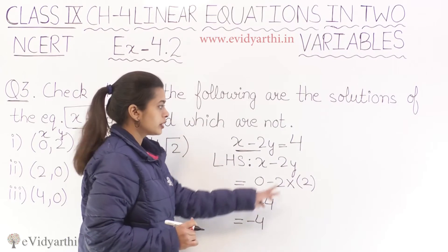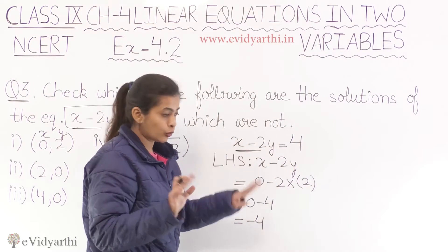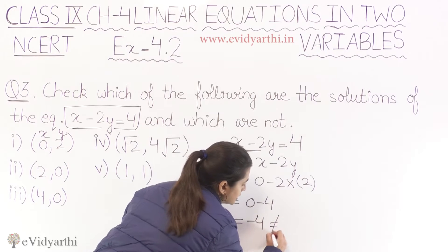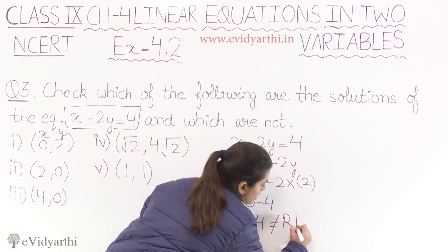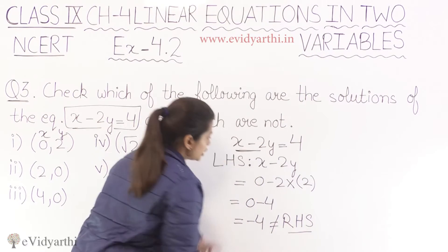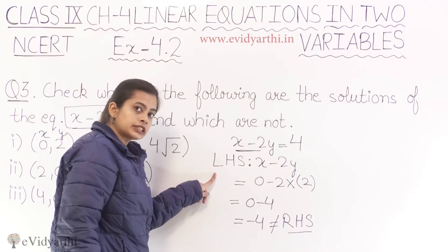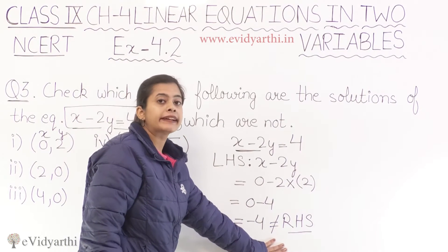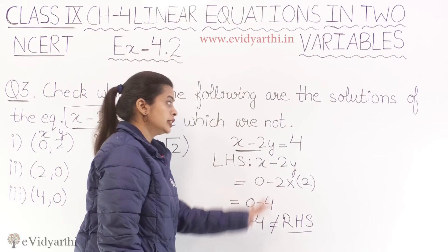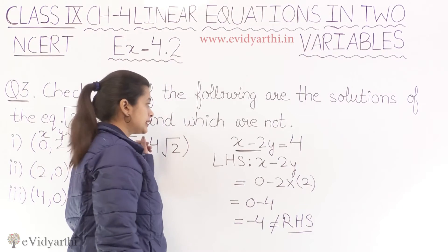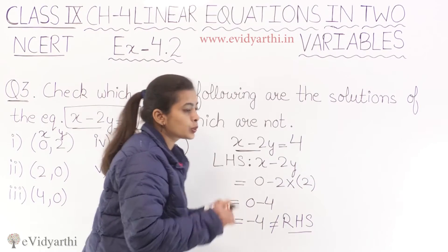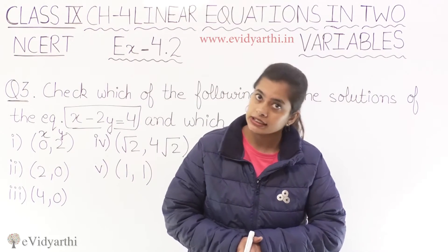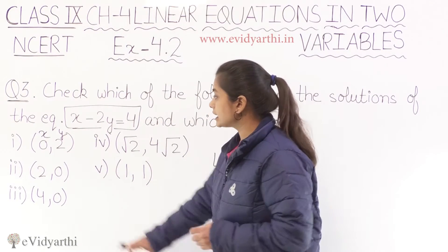Kya humara minus 4 plus 4 ke equal hai? No. We can simply write this is not equal to right hand side. Ye jo hum left hand side ko leke chalye thay, wo humare right hand side ke equal nahi hai. So is first part ke aage hum kya likhenge? That zero, two is not a solution. Chalo, ab proceed karte hai second part ka answer.